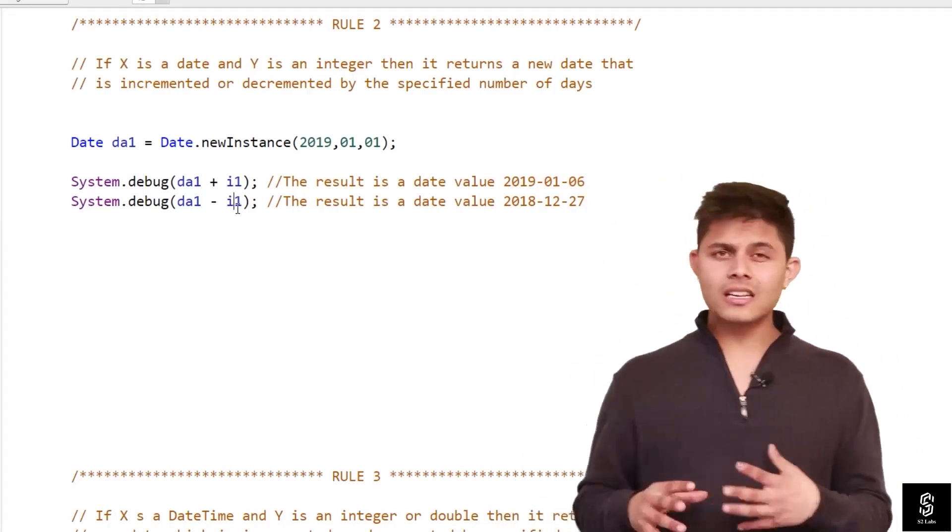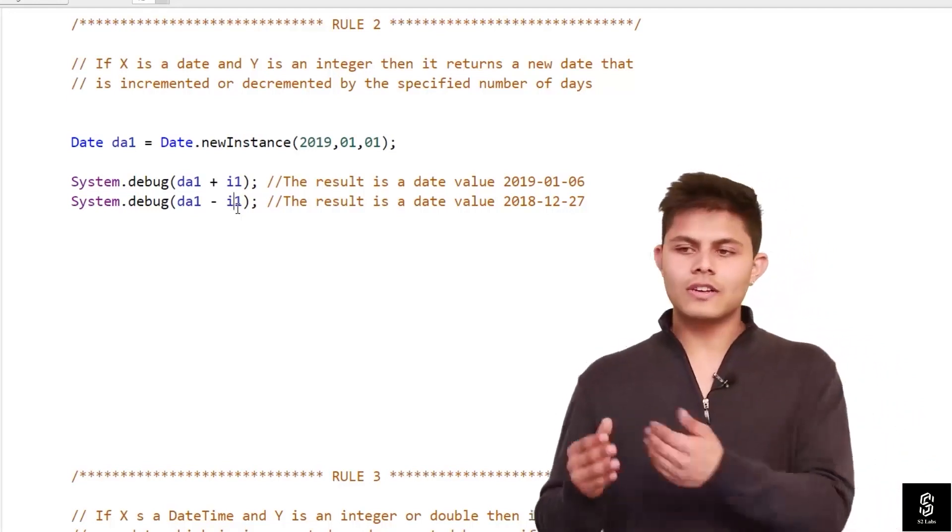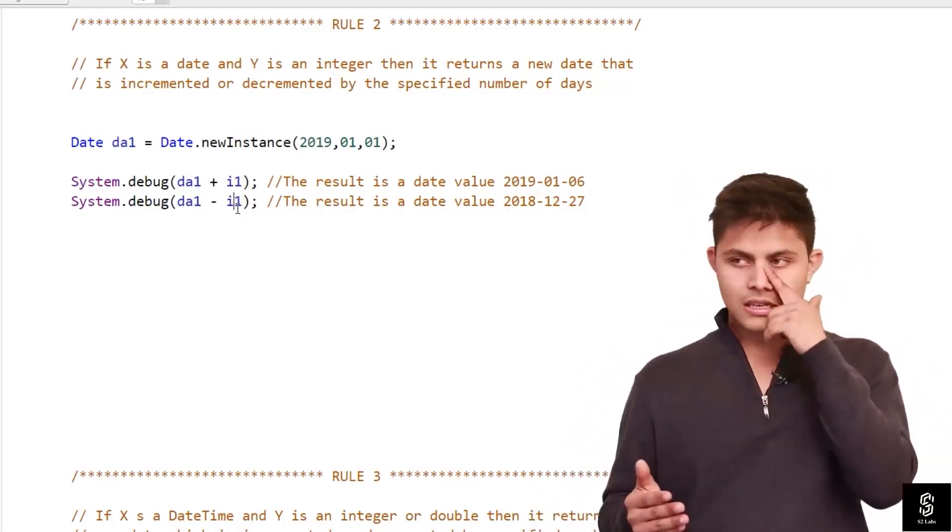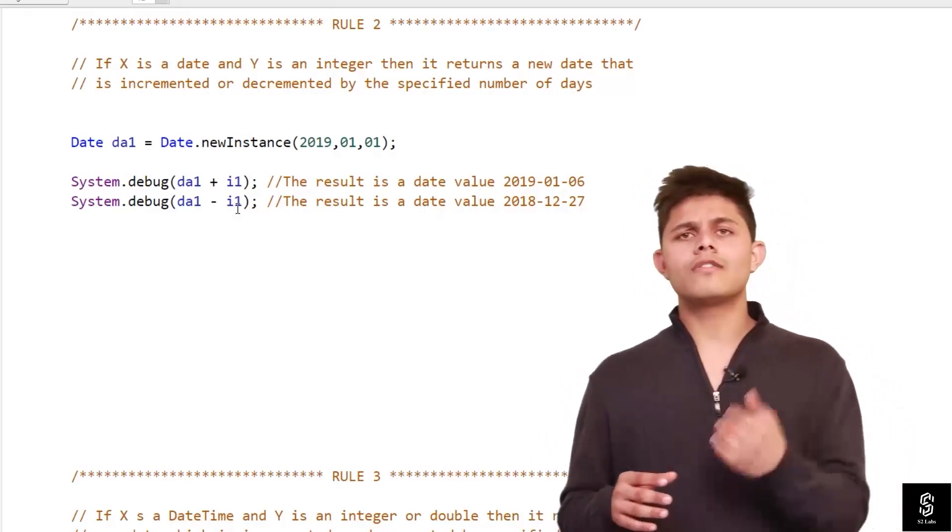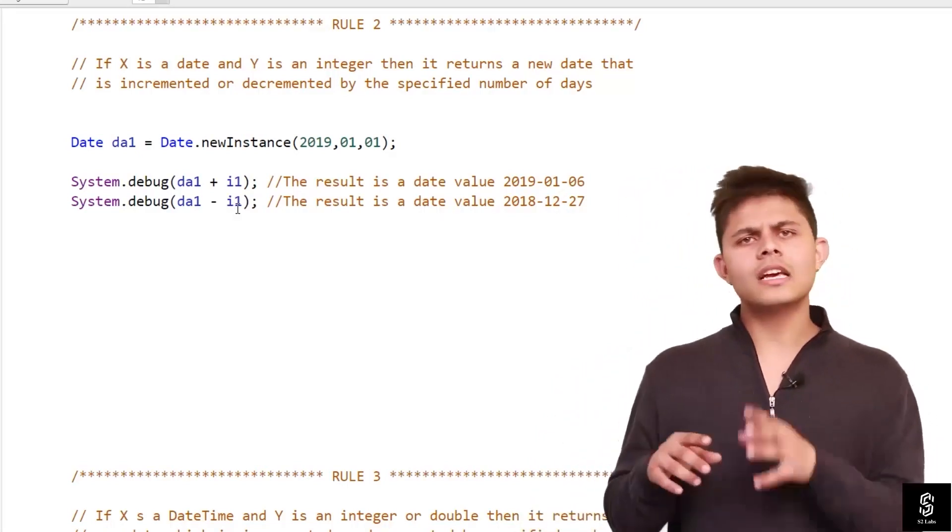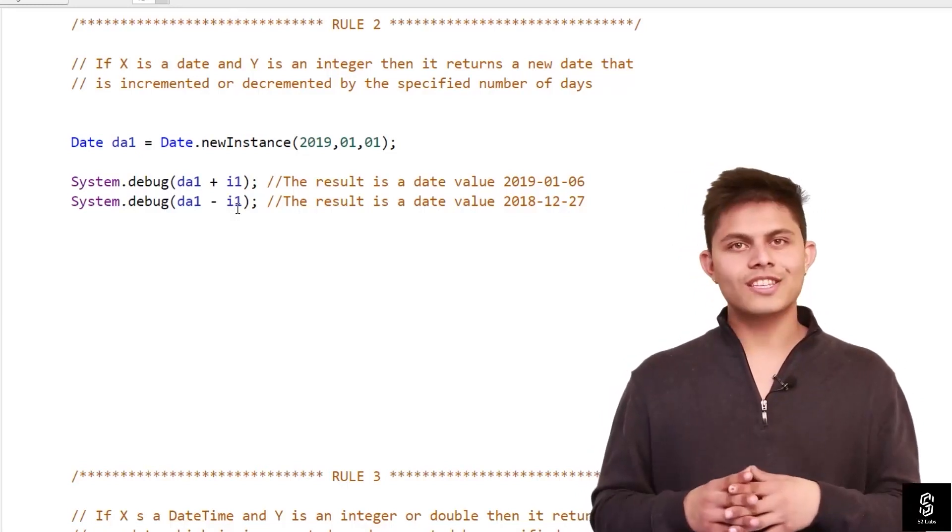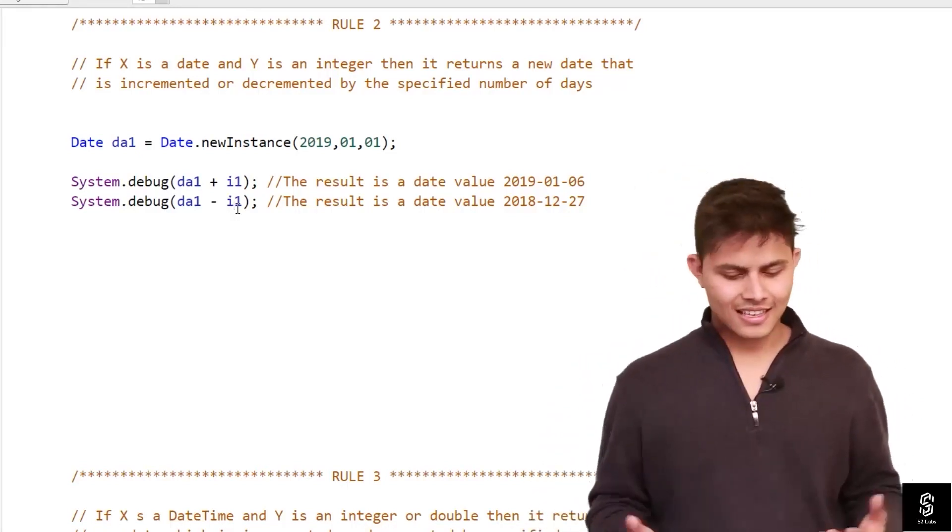If we subtract I1 from it, then obviously it will decrease the days from that particular date. If we have 1st January 2019 and we're going to minus 5 from it, then it will return 27 December 2018. That's it.